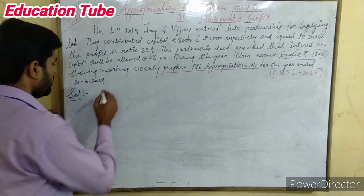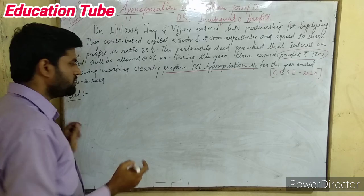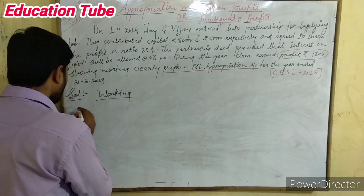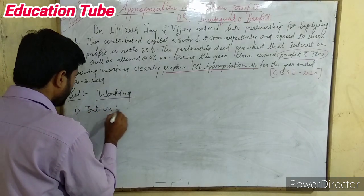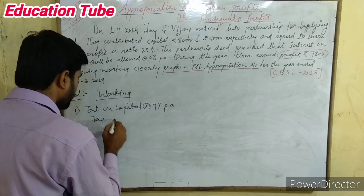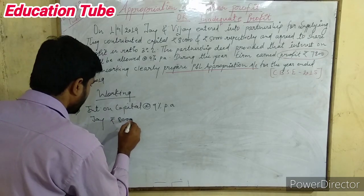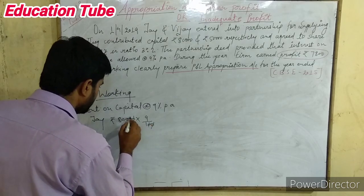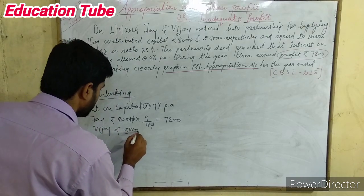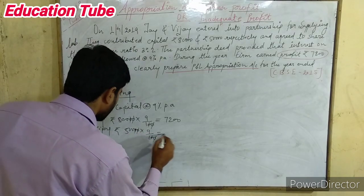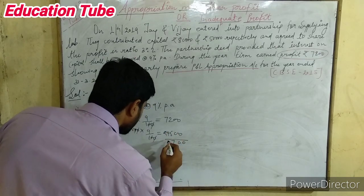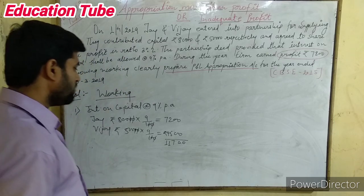Let us do the working. First step: calculate interest on capital at 9% per annum. For Jay: 80,000 × 9% = Rs. 7,200. For Vijay: 50,000 × 9% = Rs. 4,500. Total interest on capital = Rs. 11,700.